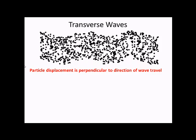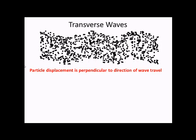Now, the second type, transverse. Here, the particle displacement is perpendicular to the direction of travel. Again, pick out a particle, and you'll notice it's not moving along the wave. It's just moving up and down.